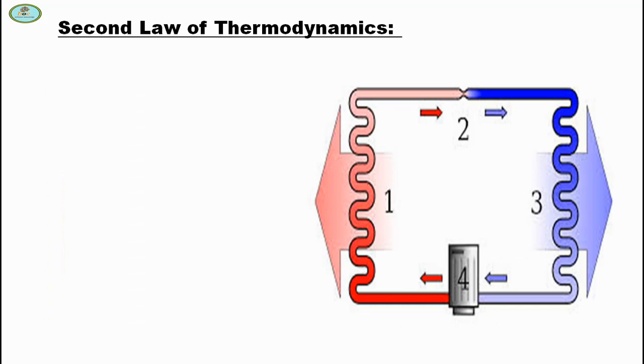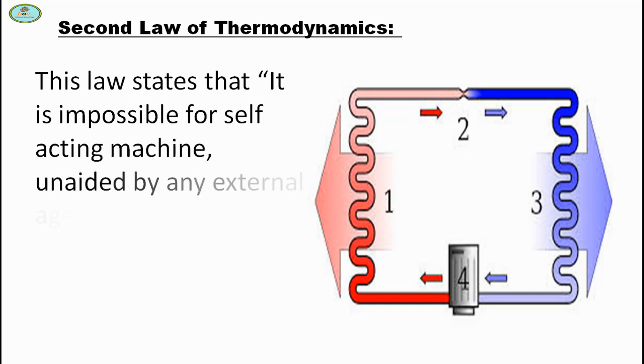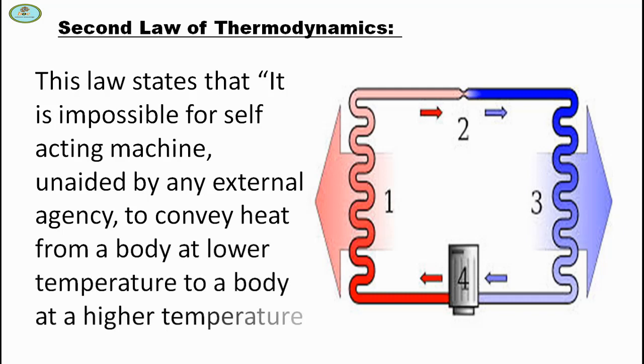The second law of thermodynamics states that it is impossible for a self-acting machine, unaided by any external agency, to convey heat from a body at a lower temperature to a body at a higher temperature.